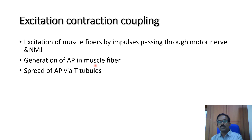The sarcotubular system is a modified endoplasmic reticulum in the muscle. It gives rise to two components: the T-tubule and the L-tubule.